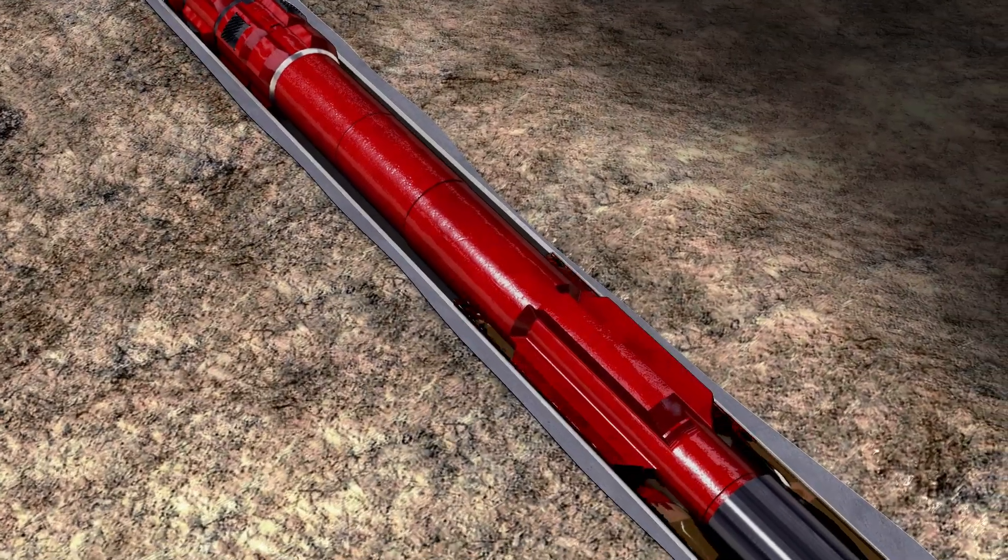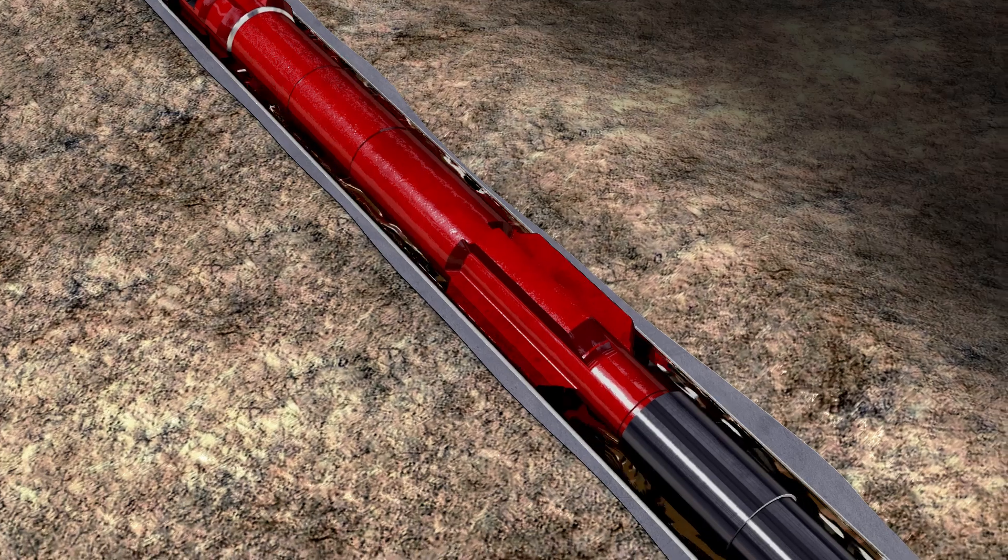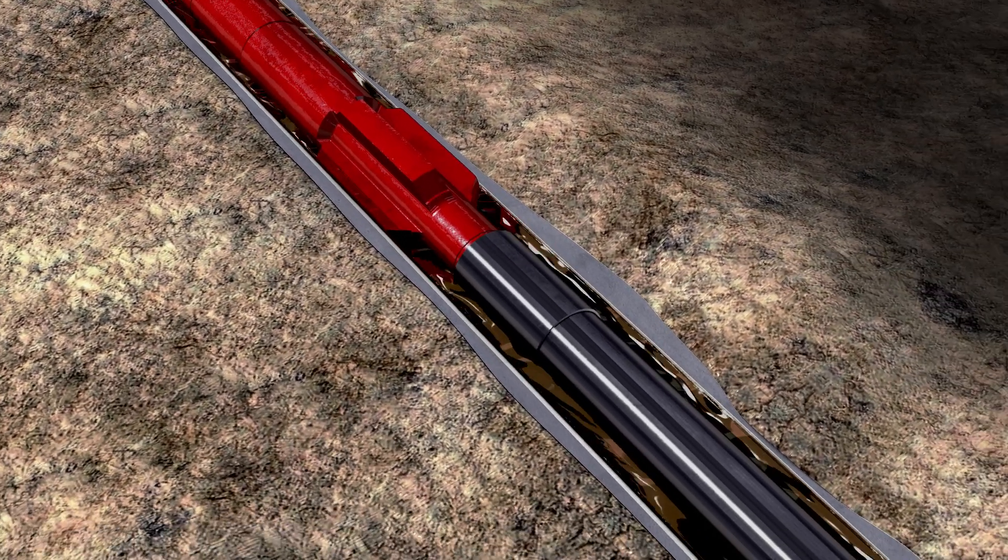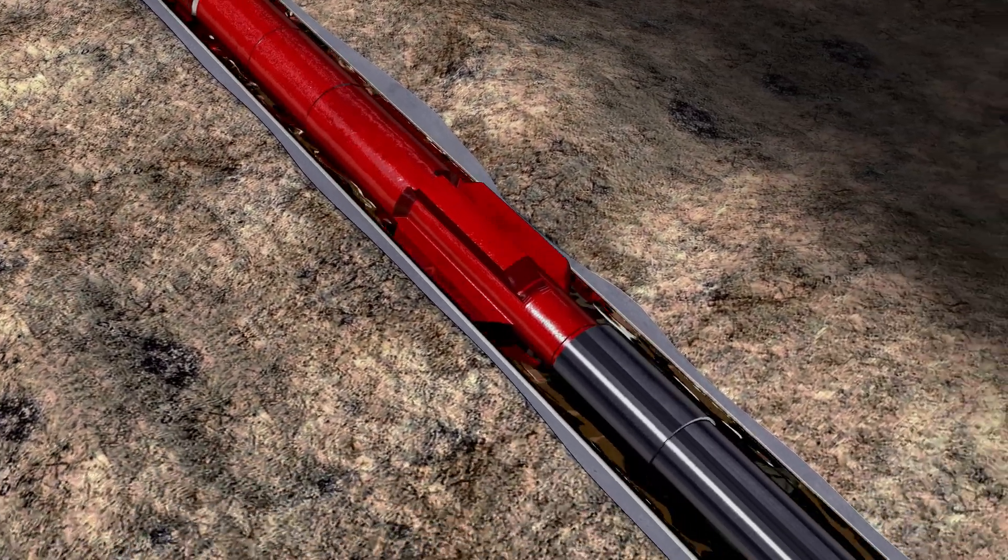Circulation is performed prior to operations to condition mud and lift solids from the wellbore. Tagging the liner with the landing sub confirms the top of the liner depth.